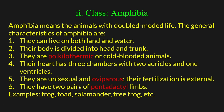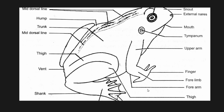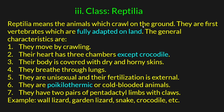Amphibians have two pairs of pentadactyl limbs — limbs with 5 fingers. Examples include frog, toad, salamander, and tree frog. There is a difference between internal and external fertilization; in amphibians, fertilization is external.